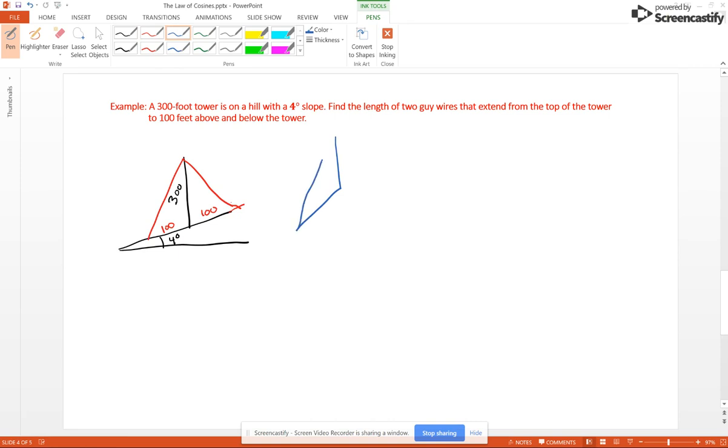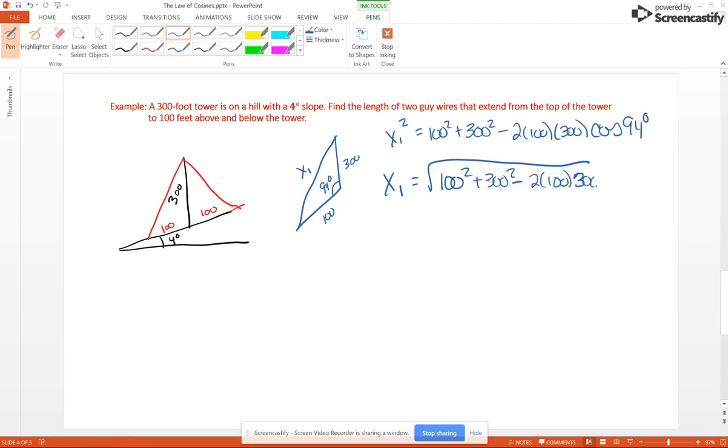Our first triangle – we'll do the downhill one. This is 300, this is 100 – that's supposed to be a straight line that we're trying to find, so we'll call that X₁. This angle is going to be 90 + 4°, because it's going downhill you would add. So X₁² = 100² + 300² - 2 × 100 × 300 cos 94°. And so X₁ is going to be the square root of all of that. You put this into your calculator and you will get approximately 322.8 feet.